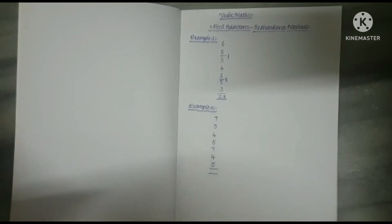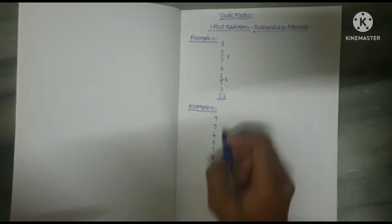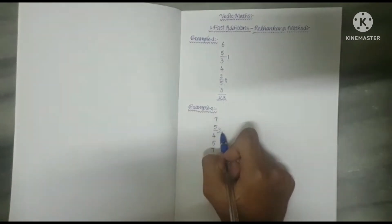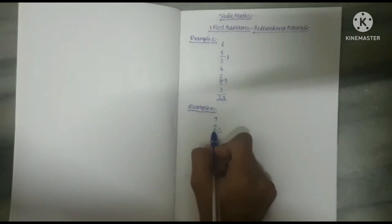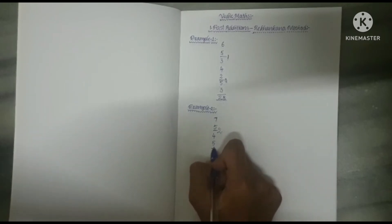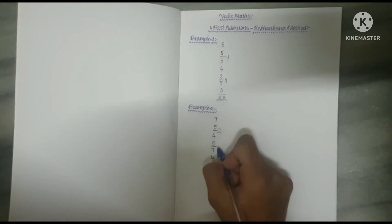And now example 2. Here 7 plus 5 is equal to 12. Here we drop 10 as a line and the balance number is 2. 2 plus 4 is equal to 6. 6 plus 5 is equal to 11. As 11 is more than 10, drop 10 as a line and this time the balance number is 1.